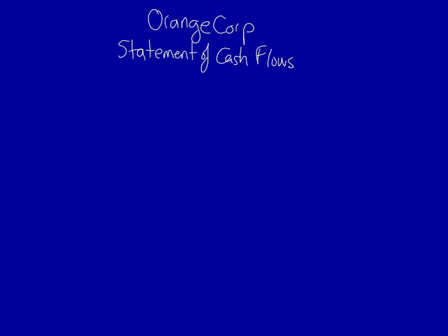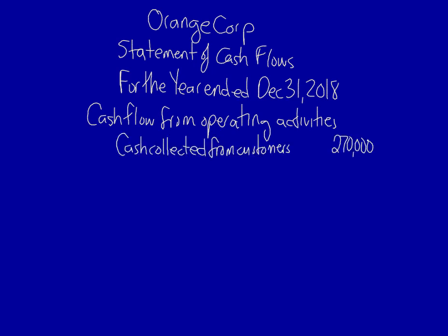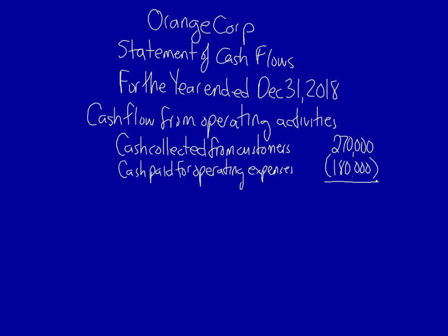As always we start the statement with the name of the company, then the name of the statement, then the period of time the statement covers. Similar to the statement of earnings and the statement of changes in equity, the statement of cash flows covers a period of time. We always start with cash flows from operating activities because operating activities are the only sustainable source of cash. We start with the cash collected from customers, then the cash paid for operating expenses. Notice that negative amounts are denoted with brackets. That gives us the net cash flow provided by operating activities — in this case the total is $90,000.